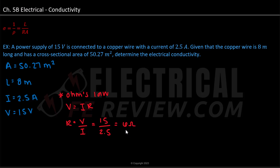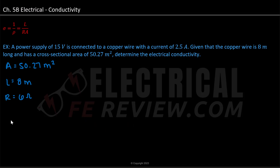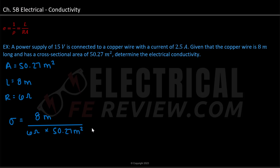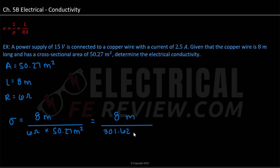Now that we've solved for resistance, let's use our formula for electrical conductivity. To solve for sigma, we use the formula L divided by R times A, since we aren't given electrical resistivity directly. Plugging in our values, we have 8 meters divided by 6 ohms times 50.27 meters squared. Multiplying 6 ohms times 50.27 meters squared gives us 301.62 ohm·meters squared. Dividing, we get 0.02653, which simplifies to 67.027 meters divided by ohm·meters squared.